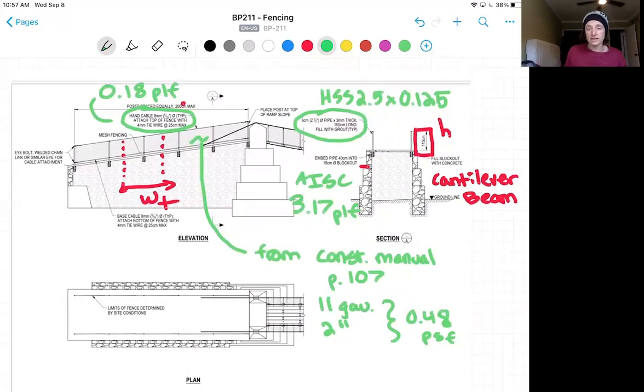Now for our fencing weight, we can use the construction manual, not the design manual, page 107 for 11 gauge and two inch or five centimeter spacing mesh fence to get a load of 0.48 PSF. And I've also attached that technical spec below.